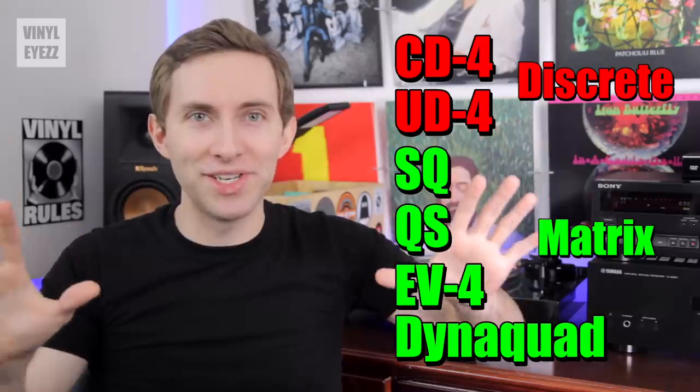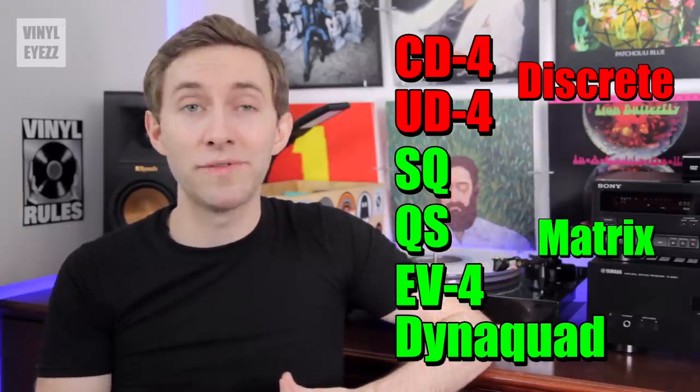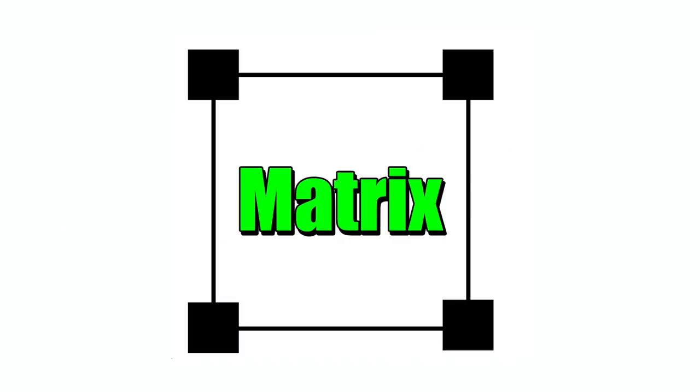The matrix systems sounded better on stereo setups. The SQ records in particular sounded the very best because they were actually designed to be backwards compatible with stereo setups. So even if you didn't buy the extra speakers, decoders, demodulators, or any of that stuff, you could just buy the SQ record and it would play fine — you just wouldn't hear those two extra channels.